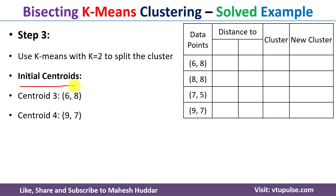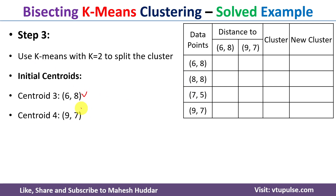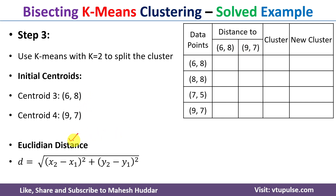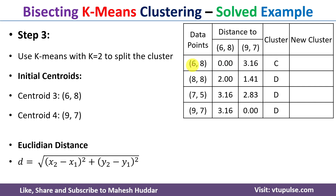We randomly select new initial centroids: centroid three is (6, 8) and centroid four is (9, 7). We then calculate the Euclidean distances from each of the four data points to these two centroids. The distances are computed and compared. For the first point, 0 versus 3 — 0 is minimum, so (6, 8) is assigned to cluster C. For the next, 2 versus 1.4 — 1.4 is minimum, so it goes to cluster D, and so on.